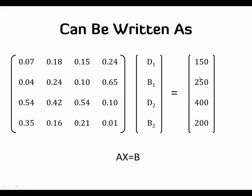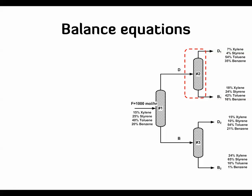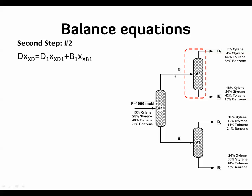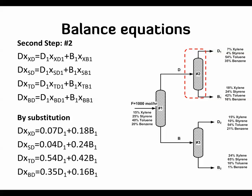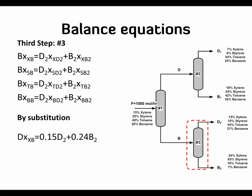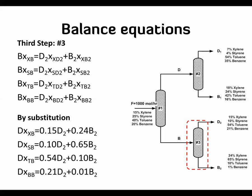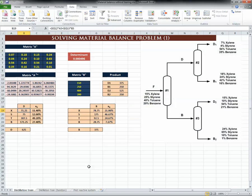This is the final matrix form we are going to work with. Once we solve and get D1, B1, D2, and B2, we will have enough information to solve column 2 and column 3 — getting the flow rate of stream D and stream B, along with their component compositions. We substitute values into those equations and get four equations and four unknowns for each subsequent column.